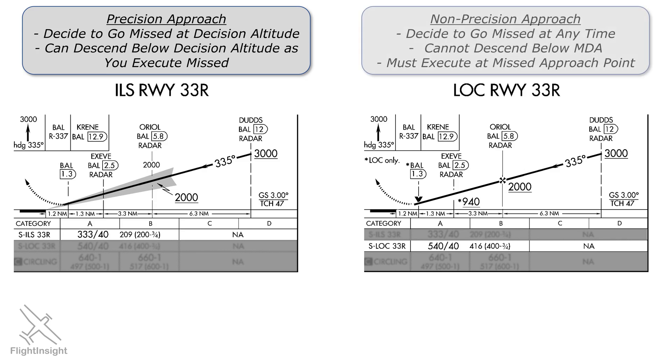On the localizer, a non-precision approach, you could decide to go missed at any time on the approach. The VDP is a good indicator of when to make that decision, since that's the point where you can make a normal descent to land from the MDA. So you can't go below the MDA at any point on the approach, hence the word minimum, in minimum descent altitude. The execution of the missed has to happen at the missed approach point.